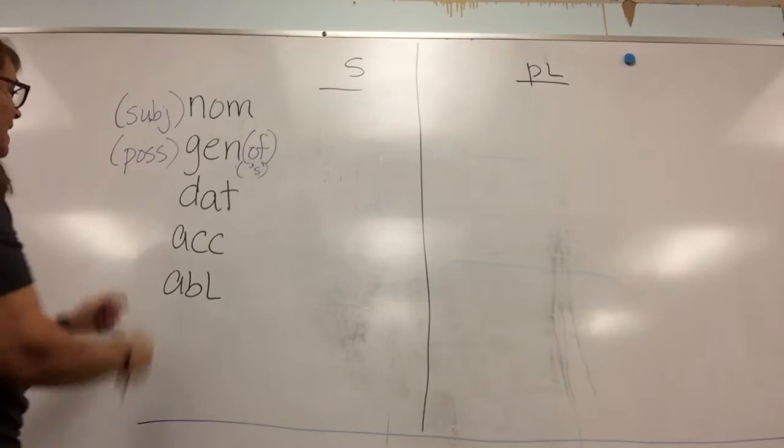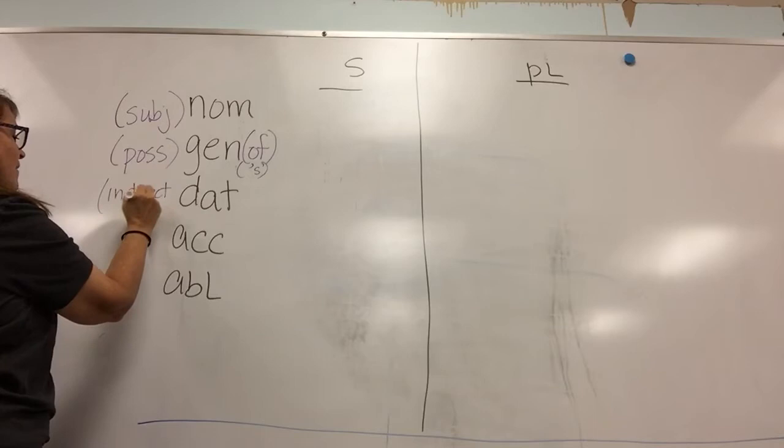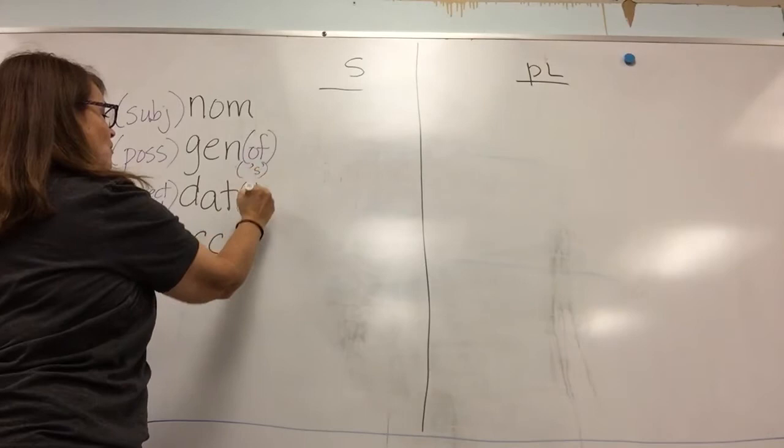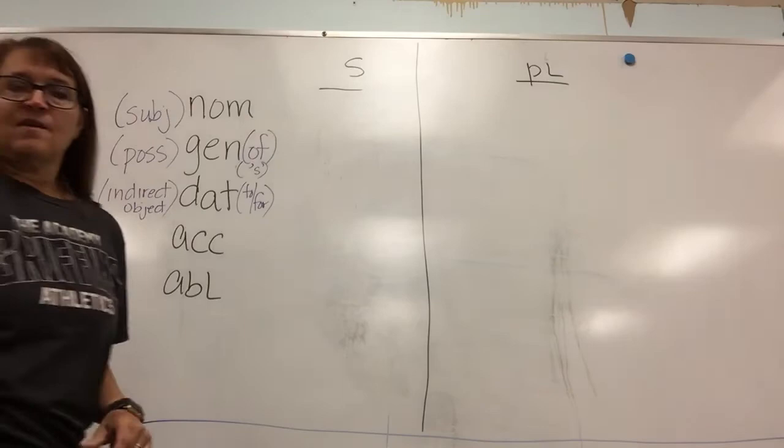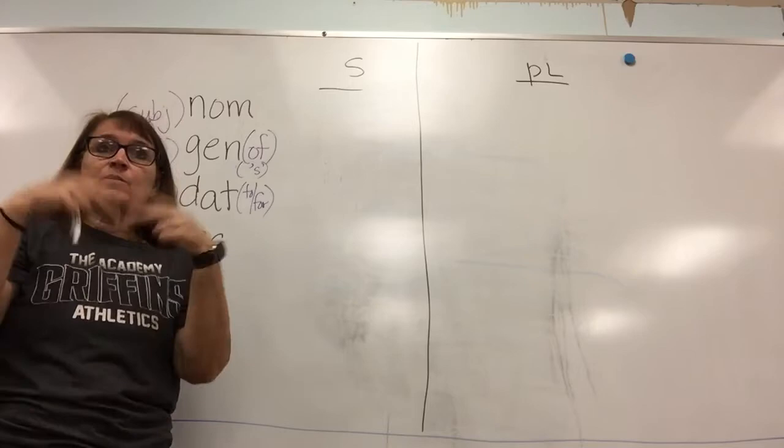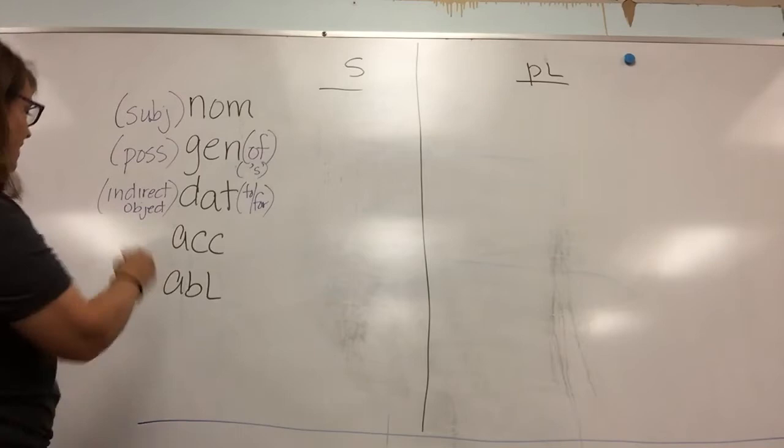Dative will show indirect object. So, when we have an indirect object — and we'll go fuller into that later — we could use the words 'to' or 'for' when we translate the dative case. For example: I gave a cookie to Jenny. So Jenny would be in the dative case — to Jenny.